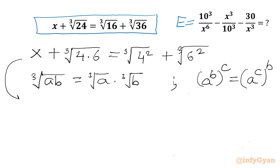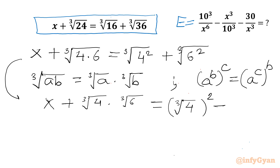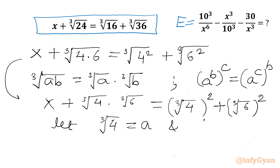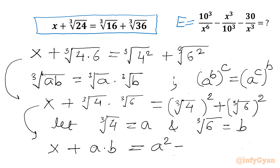Applying these properties, the equation becomes x + ∛4 × ∛6 = (∛4)² + (∛6)². Now I will use substitution: let a = ∛4 and b = ∛6. So our equation becomes x + ab = a² + b².